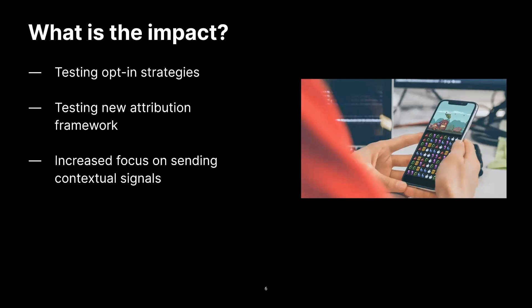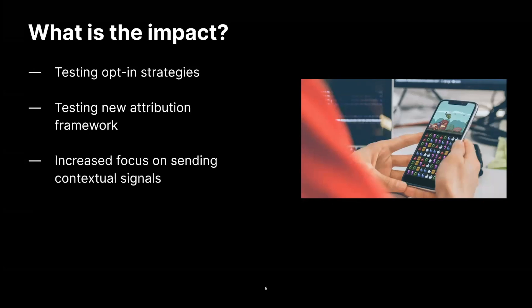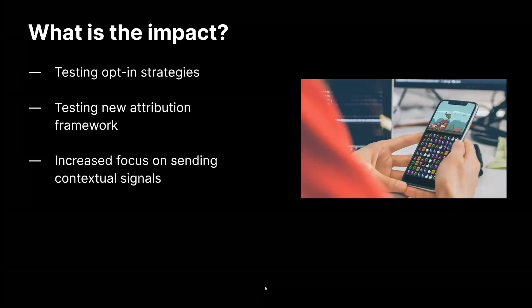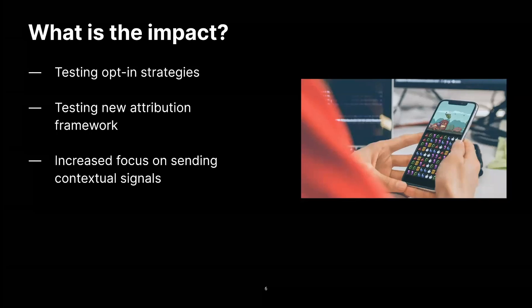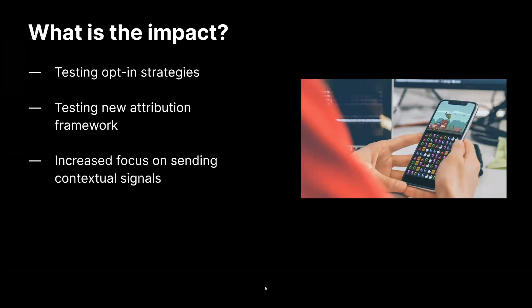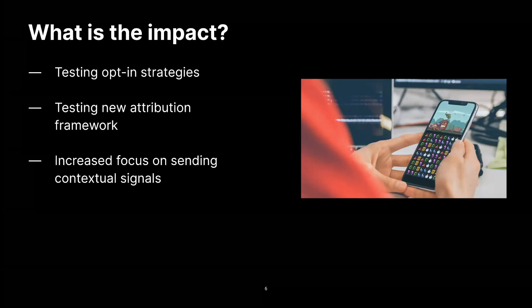It goes without saying that these changes are expected to have an impact on publisher monetization strategies. While the ads industry has been moving towards this for some time already, it has caused some uncertainty amongst publishers as the countdown is now on for Apple to implement these changes. A few things we can expect: opt-in rates will become an important goal and publishers will need to test and strategize for opt-in as the best way to continue with IDFA. Publishers will also need to start testing how they work with the new SK Ad Network attribution framework. Finally, as behavioral targeting becomes more dependent on tracking opt-in, publishers will need to start focusing on what contextual signals they're able to send to advertisers.